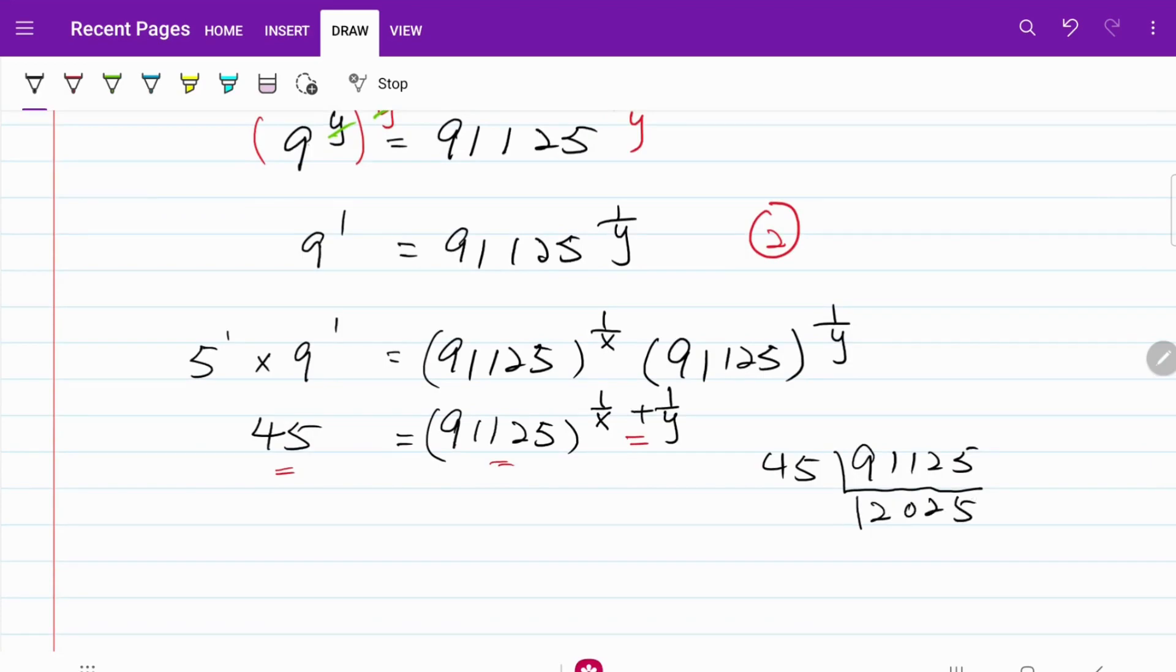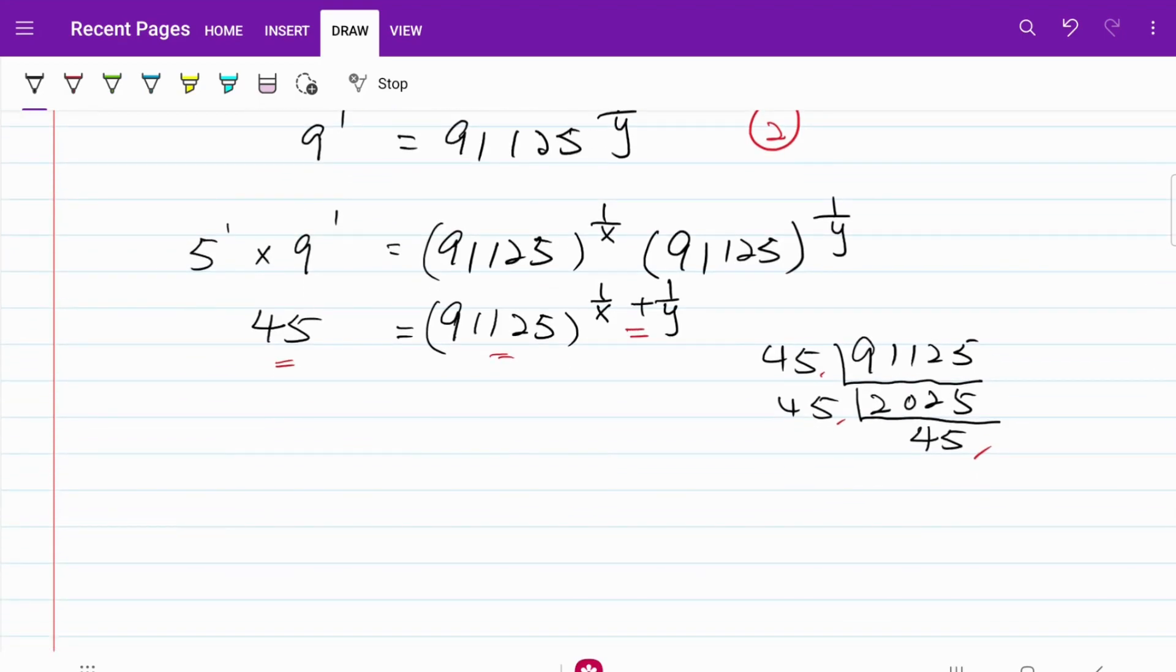There's no need to go any further because we are only interested in 45. So we now know 91,125 is equal to 45 times 45 times 45. In other words, that's equal to 45 cubed. So let's go ahead and equip both sides of the equation.